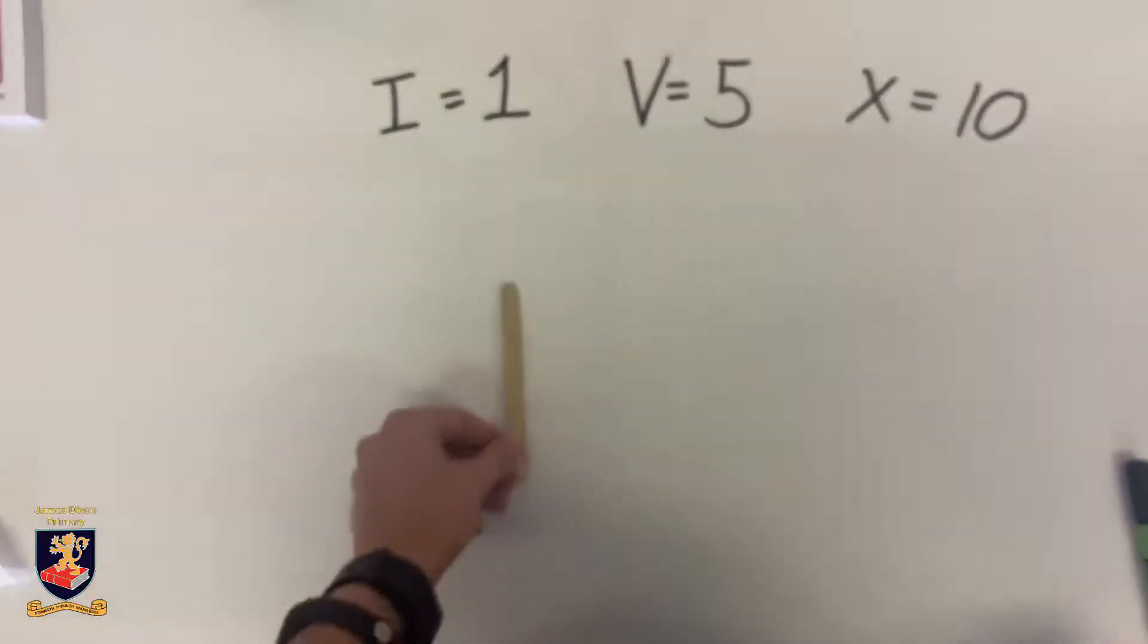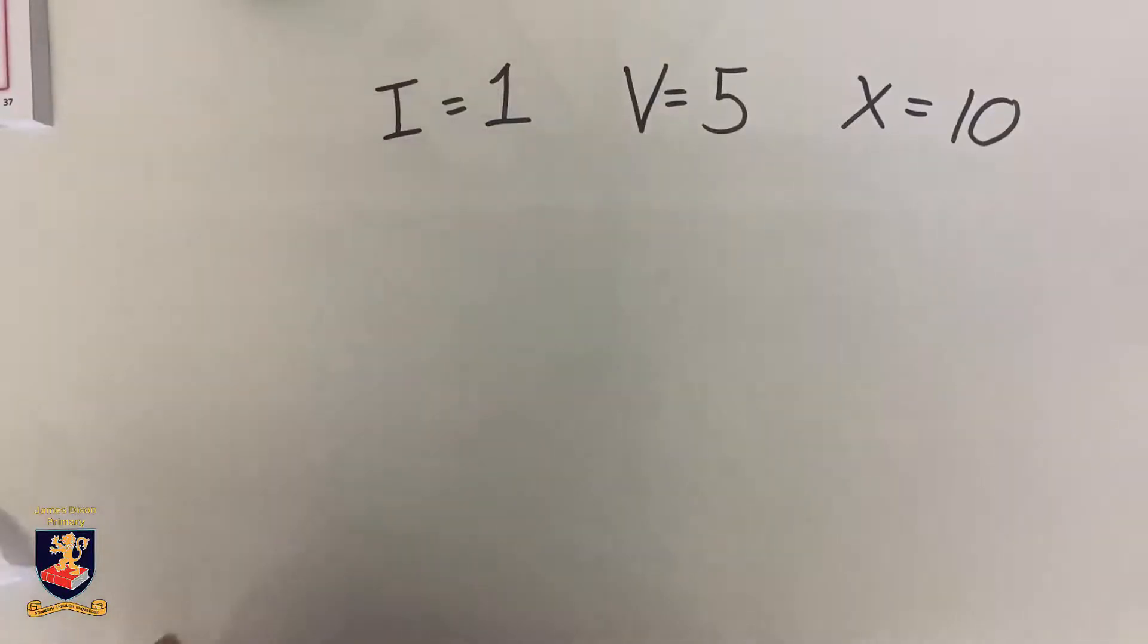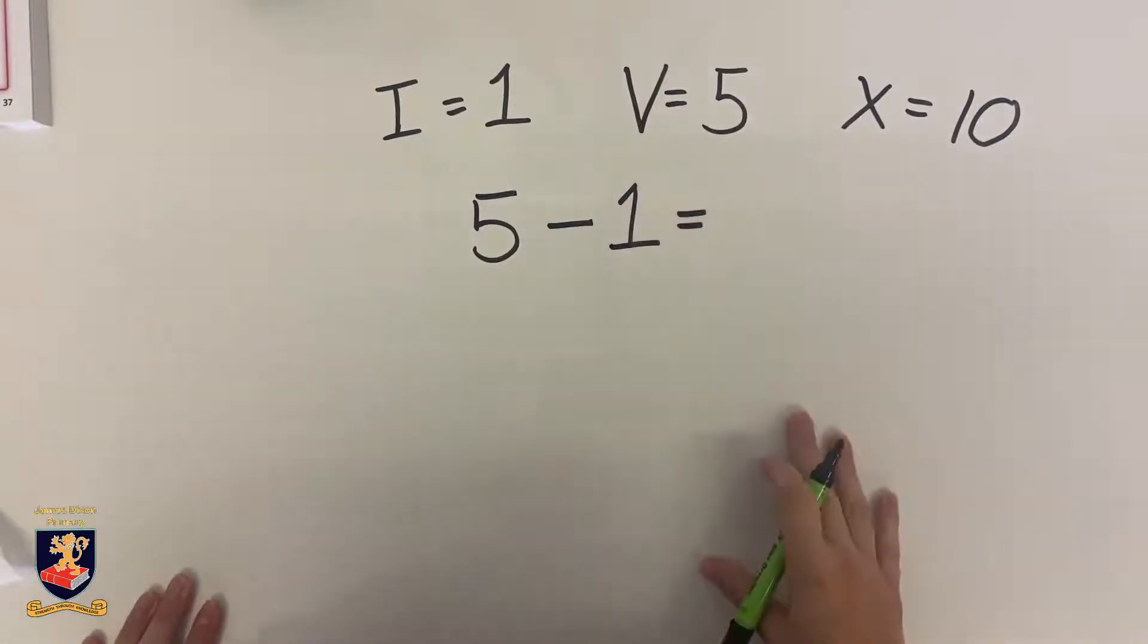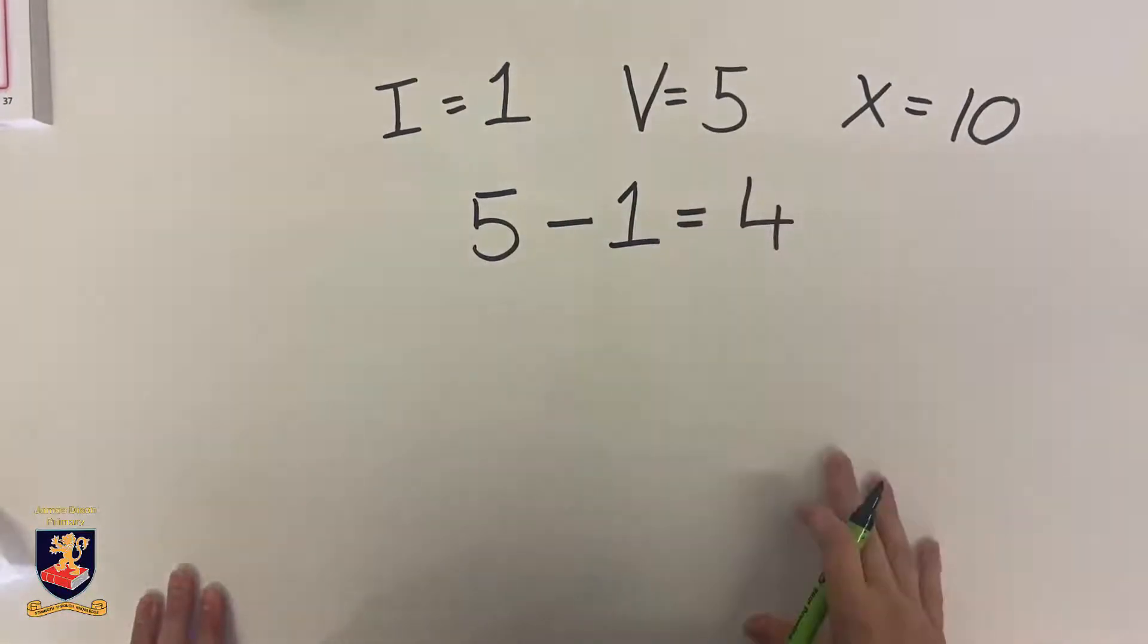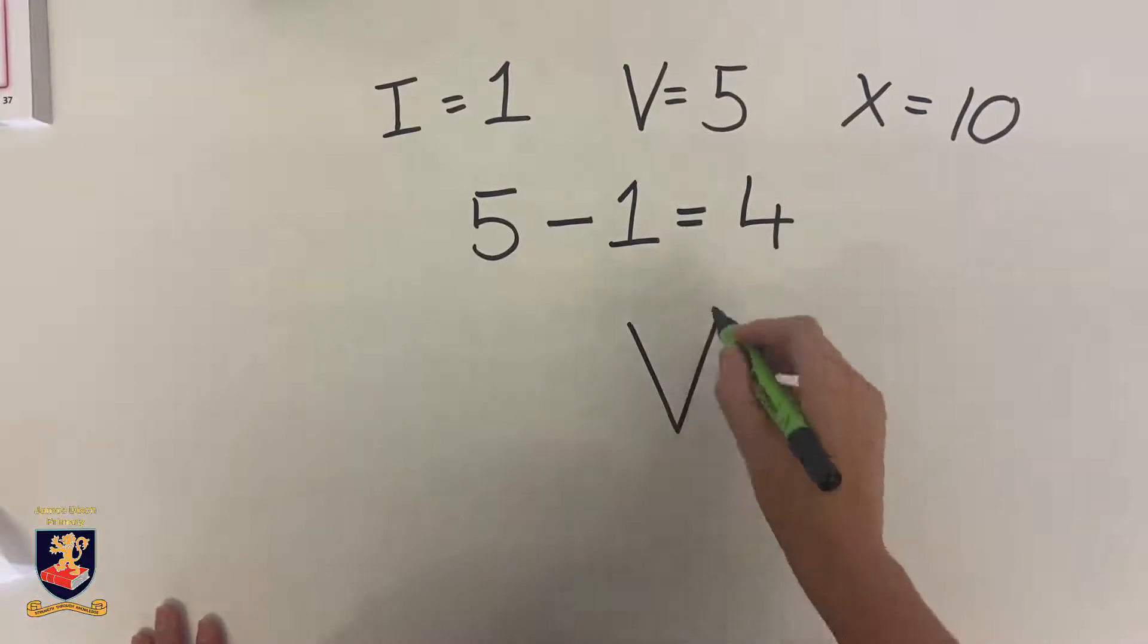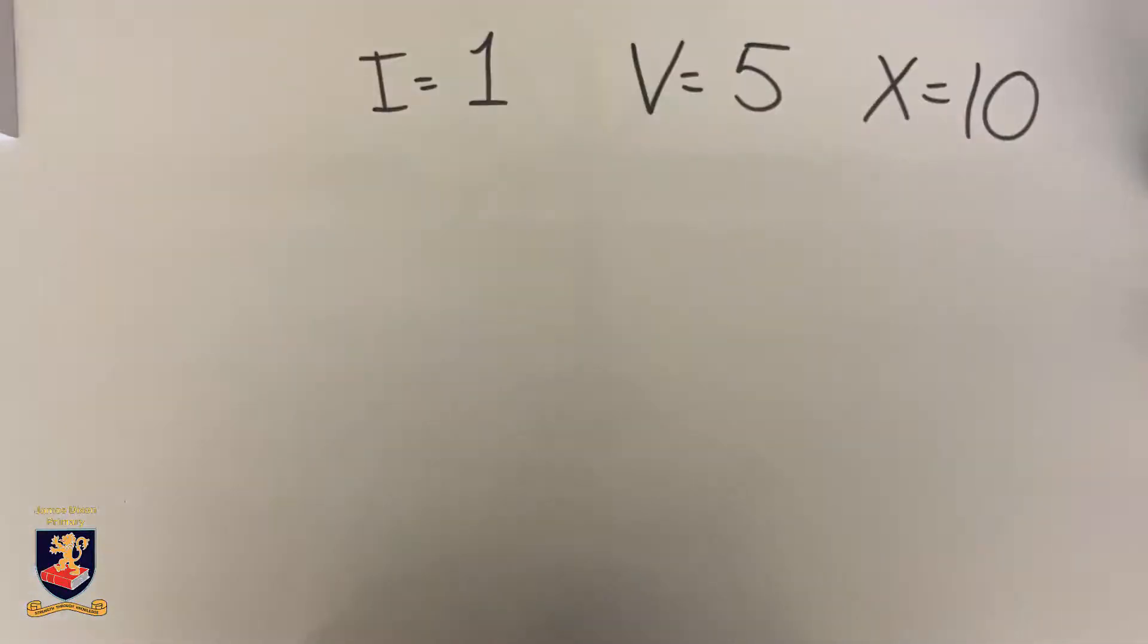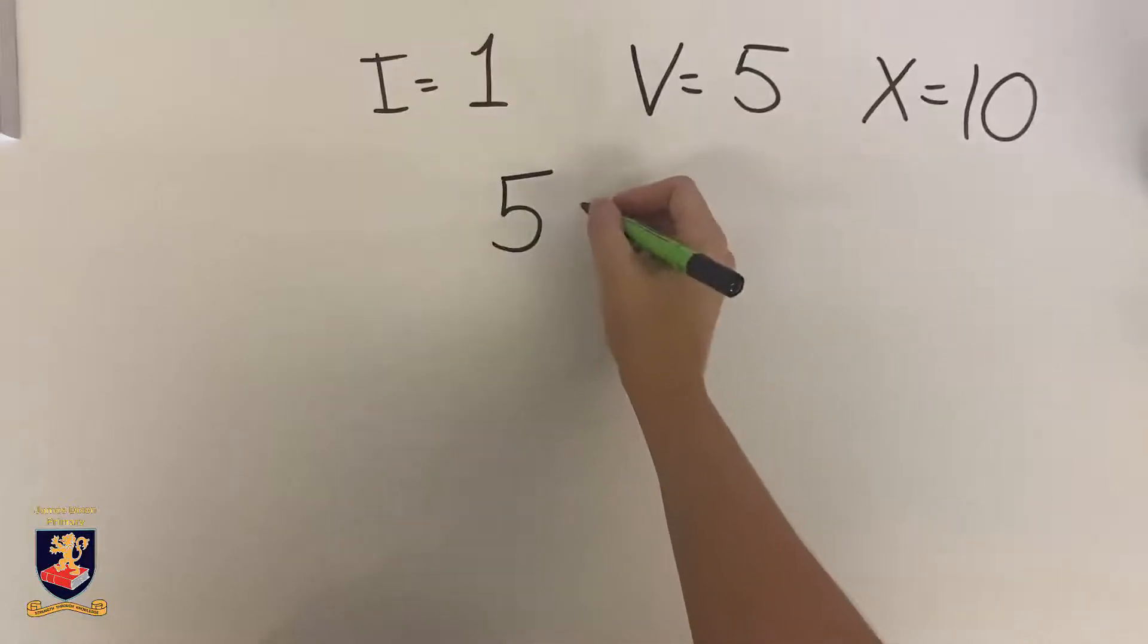In this video, the lollipop stick represents one. To write the number four in Roman numerals, we need to look at what five is. Five subtract one equals four. Four is one less than five, so we write five, which is V, and put one less. So we put a one on the left-hand side to show four.